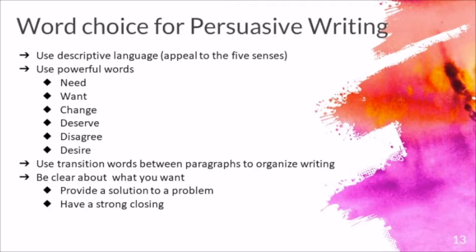When writing persuasively, you want to make sure that you appeal to the five senses by using descriptive language. You also want to use powerful words such as need, want, change, deserve, disagree, desire, and many more. If you have a dictionary, you can look up a few more. Also, you want to use transition words between paragraphs to organize your writing. Lastly, be clear about what you want, provide a solution to a problem, and have a strong closing.